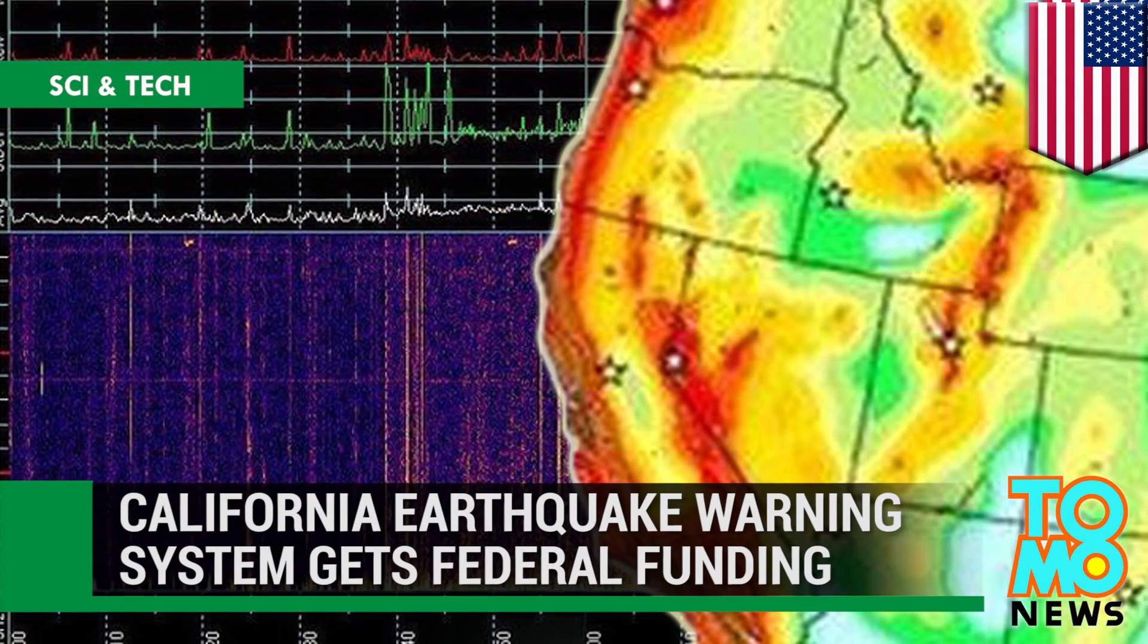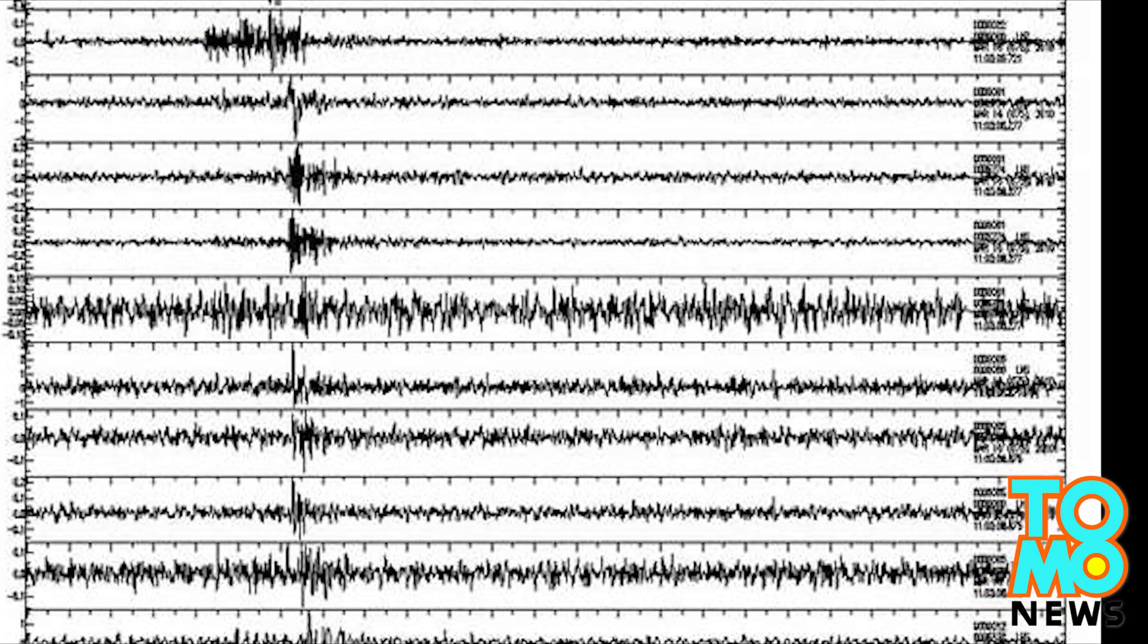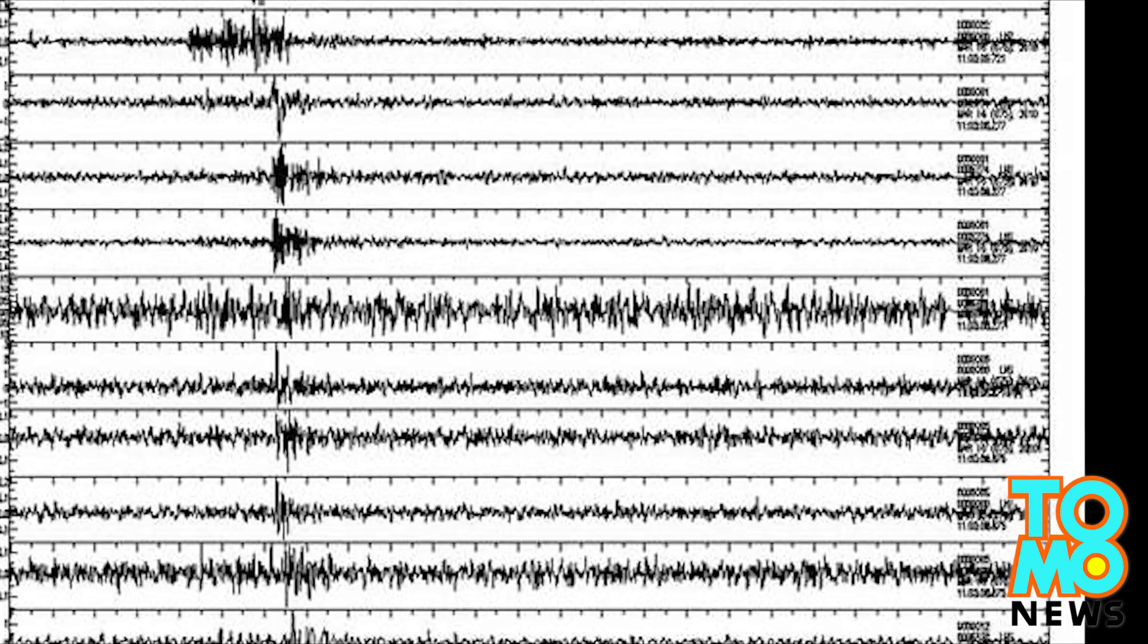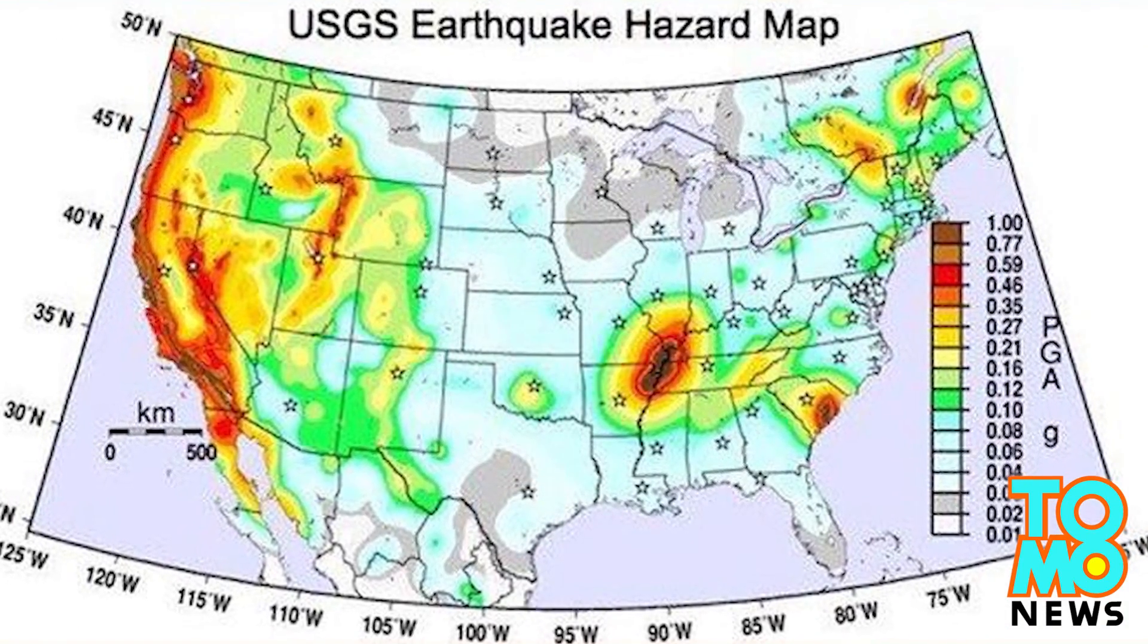California Earthquake Warning System Gets Federal Funding. The U.S. House of Appropriations Committee has recommended $5 million in federal funding for an earthquake early warning system in the quake-prone west coast of California.